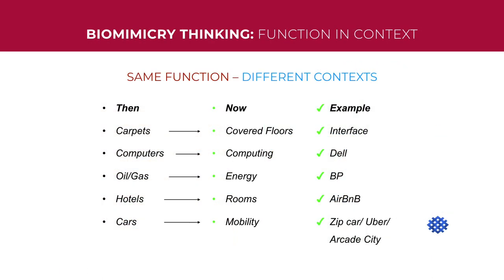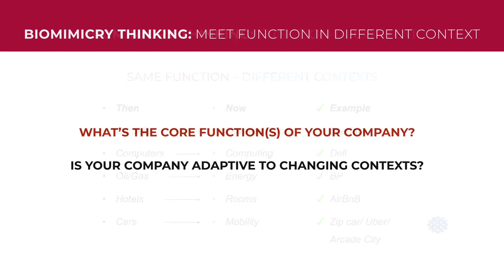This trend is happening in many different industries, as industries realize that if they define themselves based on their service or function, they can evolve to fit any context. Rather than carpets, provide covered floors — then you can recycle them. Rather than hotels, provide rooms like Airbnb. Rather than cars, provide mobility like Uber and Zipcars. So applying biomimicry thinking to your business: what's the core function of your company or department? Is your company able to adapt to changing contexts? Using function rather than noun, you can adapt your strategy and find inspiration from the natural world to innovate using biomimicry.